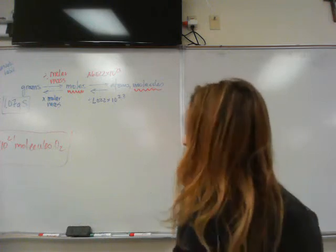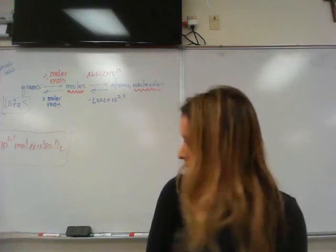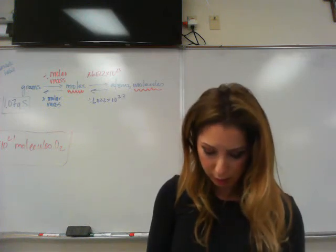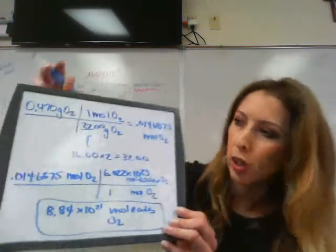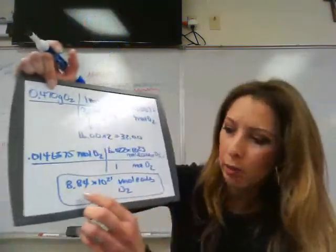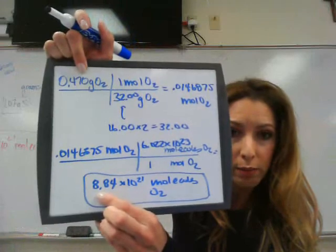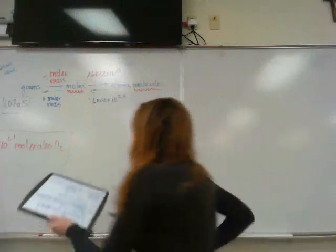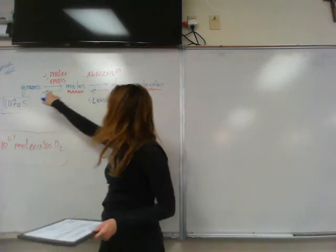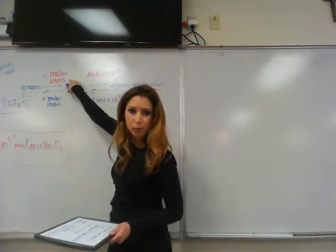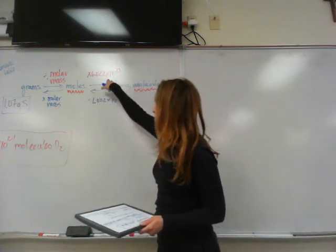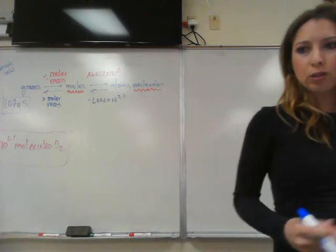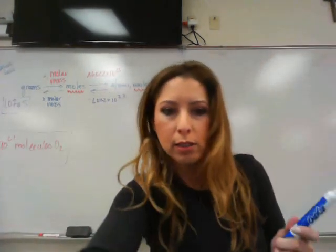So you're going to multiply this out and end up getting 8.84 times 10 to the 21st molecules of O2. We started with three significant figures, so that's why we're ending with three significant figures. Looking back at the diagram on the board, we started with grams, converted grams to moles by dividing by the molar mass first, then once you have moles, convert to molecules by multiplying by Avogadro's number. So now you can do mole calculations 3, and that's it.